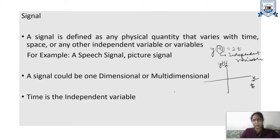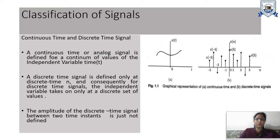For continuous time signals we will use t as the independent variable, and for discrete time signals we will use small n as the independent variable. A continuous time signal is one where the independent variable is continuous in nature — it is defined for all values of time. You can see in the figure that x(t) is defined for all values of t: if you define a value at t=0 and at t=1, the signal is also defined for all values in between. So a continuous time signal, or analog signal, is defined for a continuum of values of the independent variable.